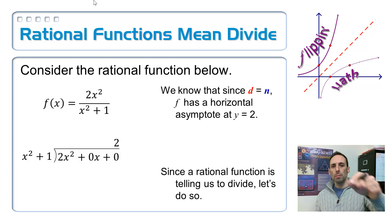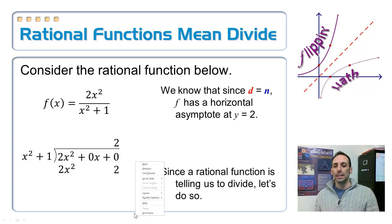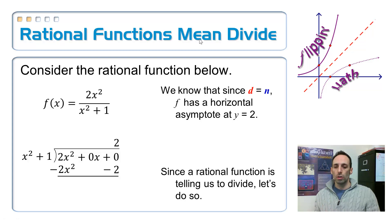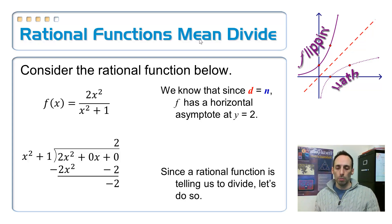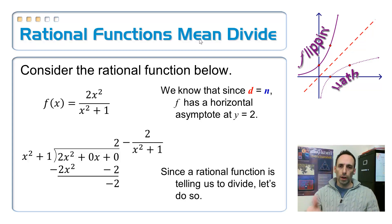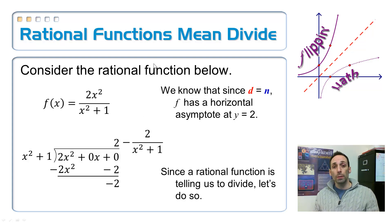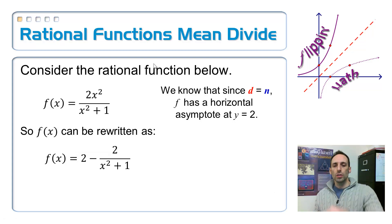Ask yourself: how many times does x² go into 2x²? It goes in two times. I put that 2 above and multiply: 2 times (x² + 1) gives 2x² + 2. Then subtract - I get a remainder of negative 2, because x² + 1 doesn't go into that any more times. So I write that as 2 minus 2/(x² + 1). The function we started with and the one we got from division are equivalent - they just look a little different.